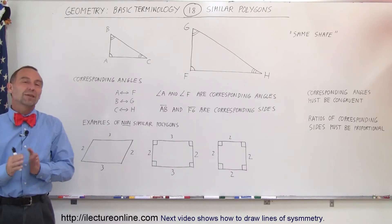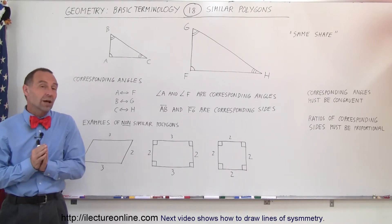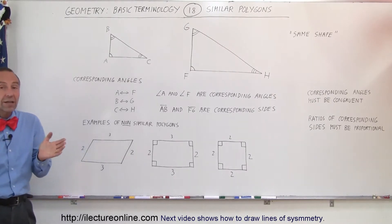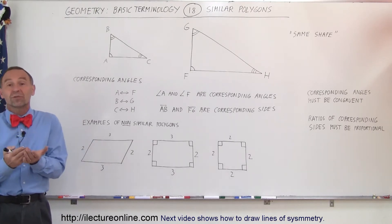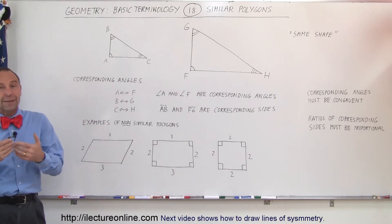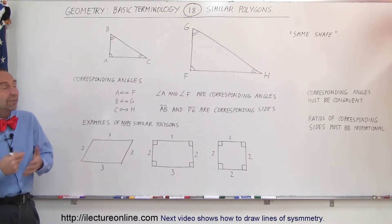Welcome to ElectronLine. Now we're going to talk about similar polygons. A polygon is a shape that has multiple sides — that's where the name polygon comes from. Poly means many.